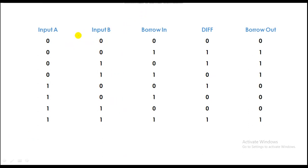So here we have three inputs: input A, B, and Borrow In. And the outputs are Difference and Borrow Out.